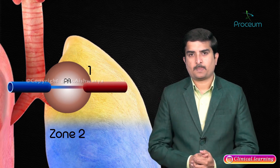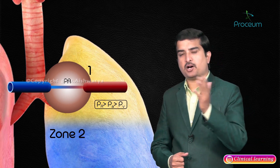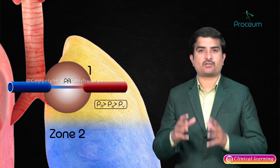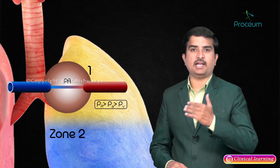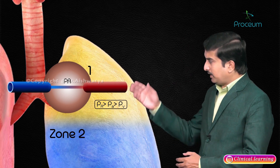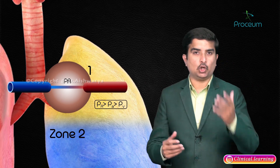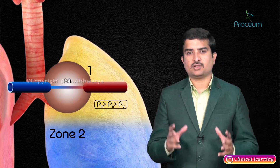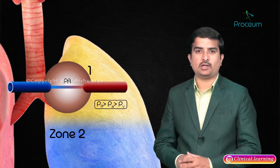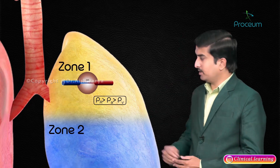Zone 1 conditions occur where the alveolar pressure is greater than the venous pressure, which occurs mainly when the hydrostatic arterial and venous pressures are lower than the alveolar pressures. This can be seen in the lung apices where the arterial hydrostatic pressures are reduced relative to the pressures of the arteries supplying the lower lung fields. In these conditions, the blood vessel is completely collapsed and there is no blood flow during systole and diastole.